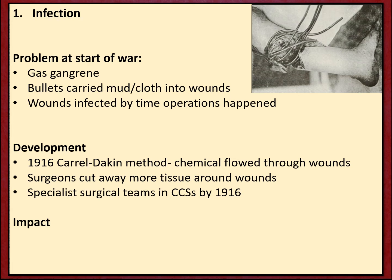By 1916, in casualty clearing stations there were specialist teams of surgeons used to working on specific parts of the body or specific types of wound, so they got better at their practice. The impact of this was a large reduction in amputations - the removal of limbs - as the war carried on.